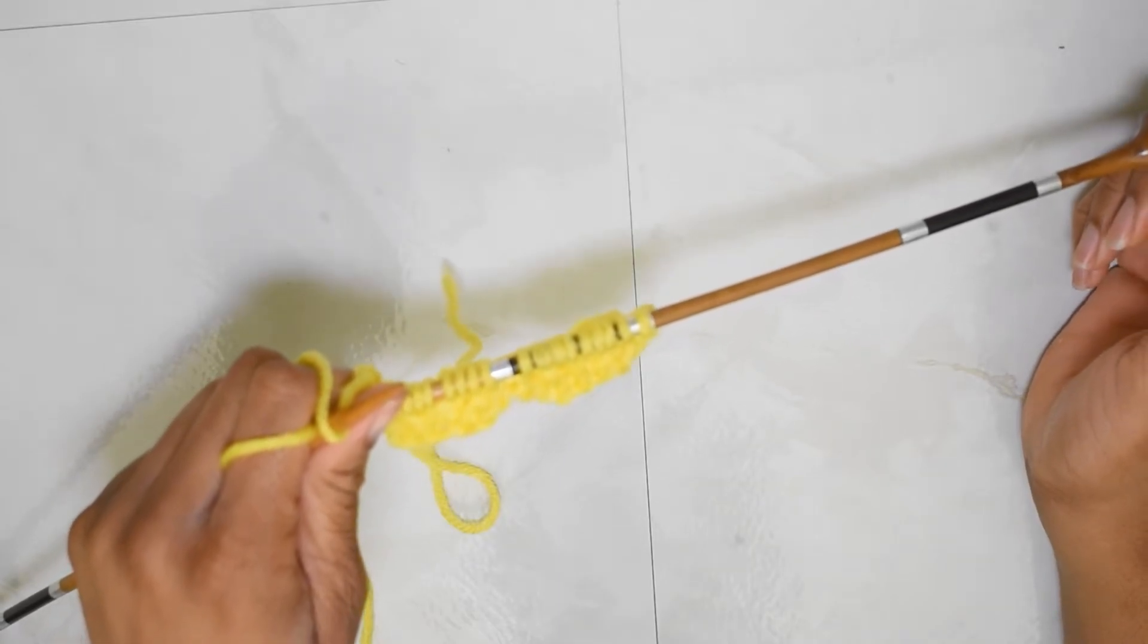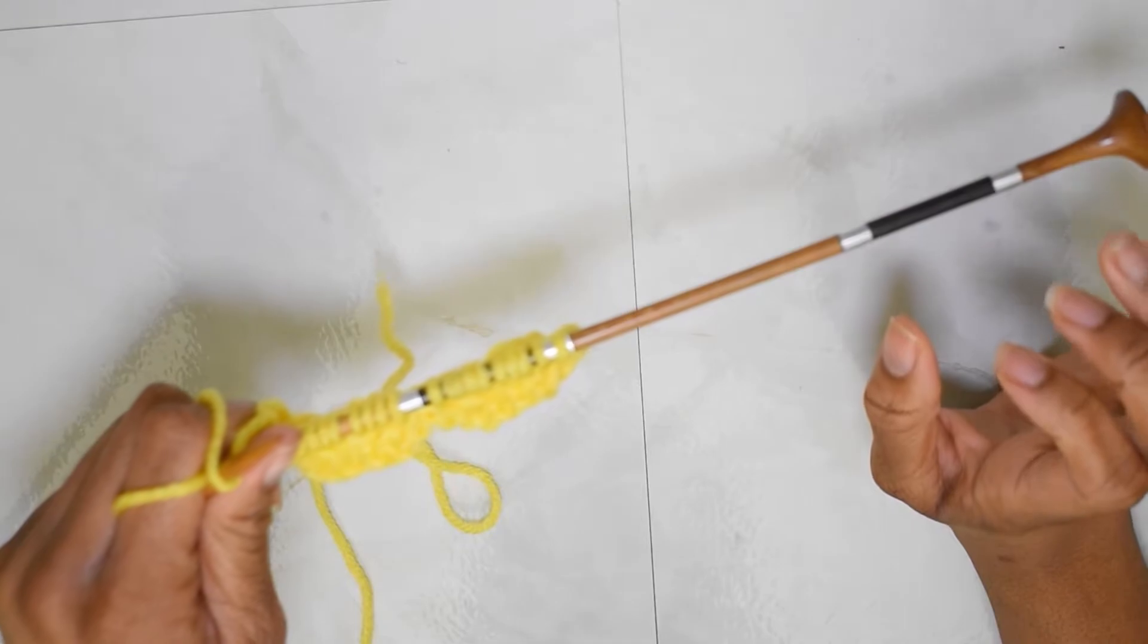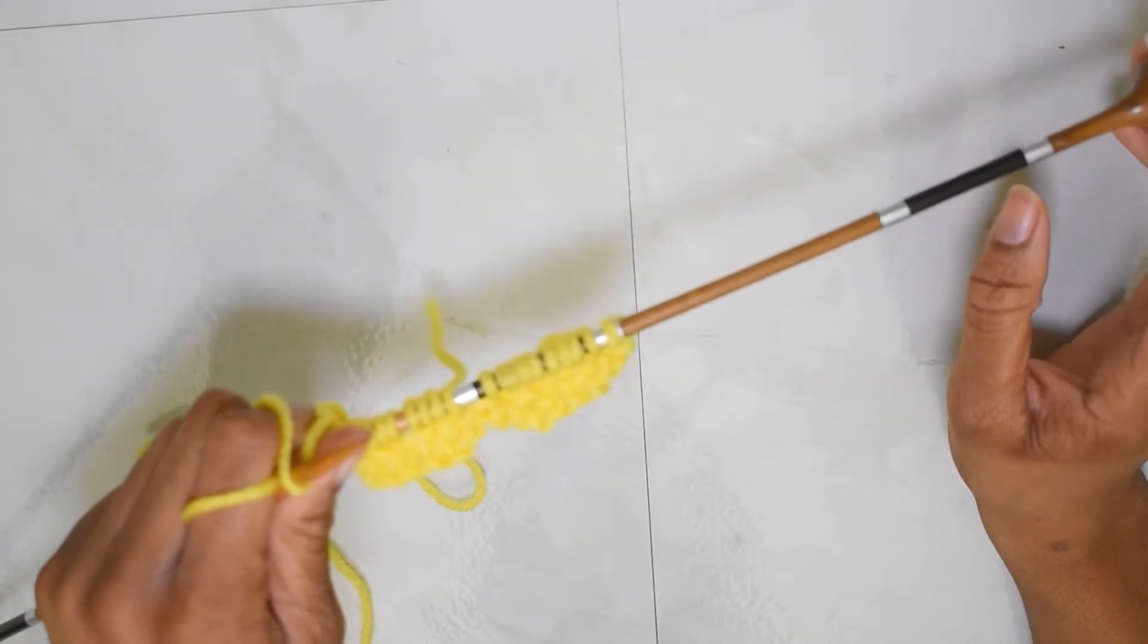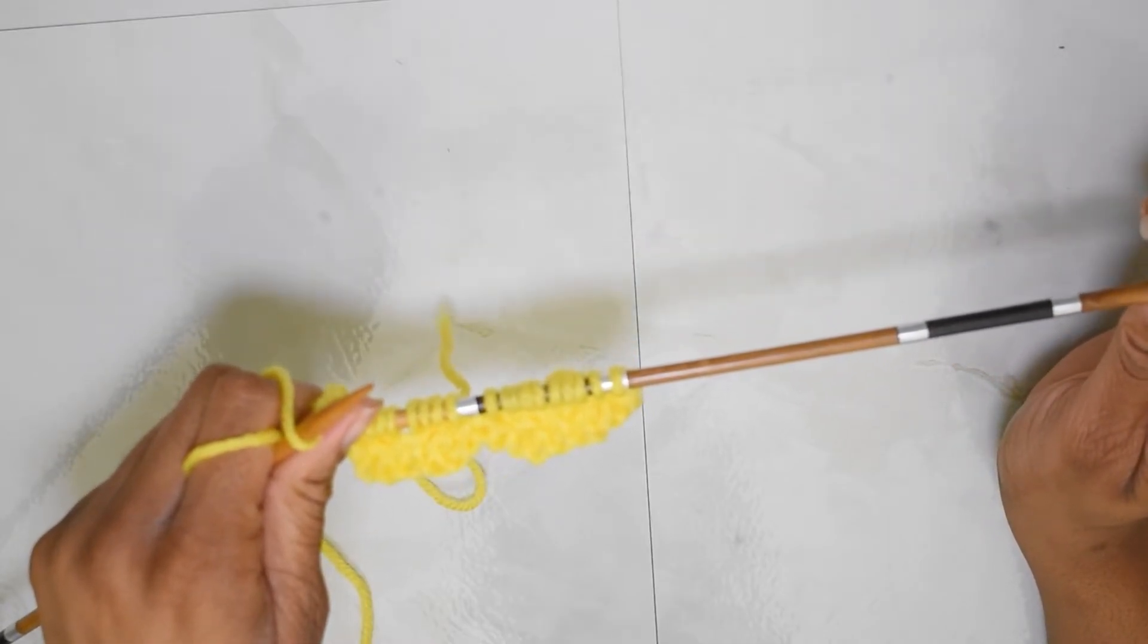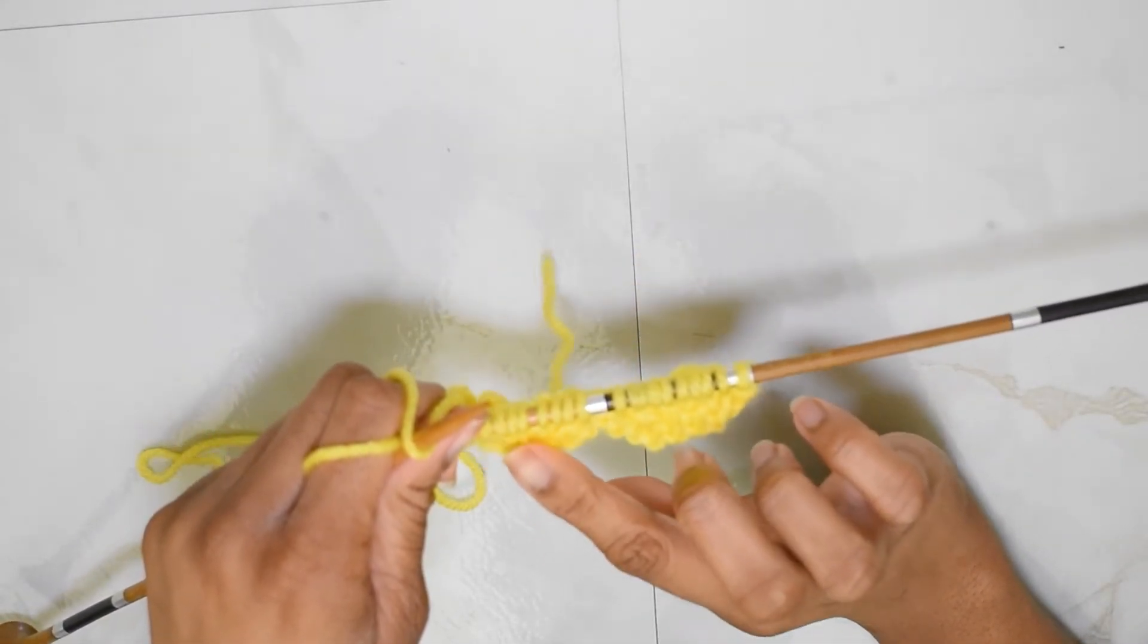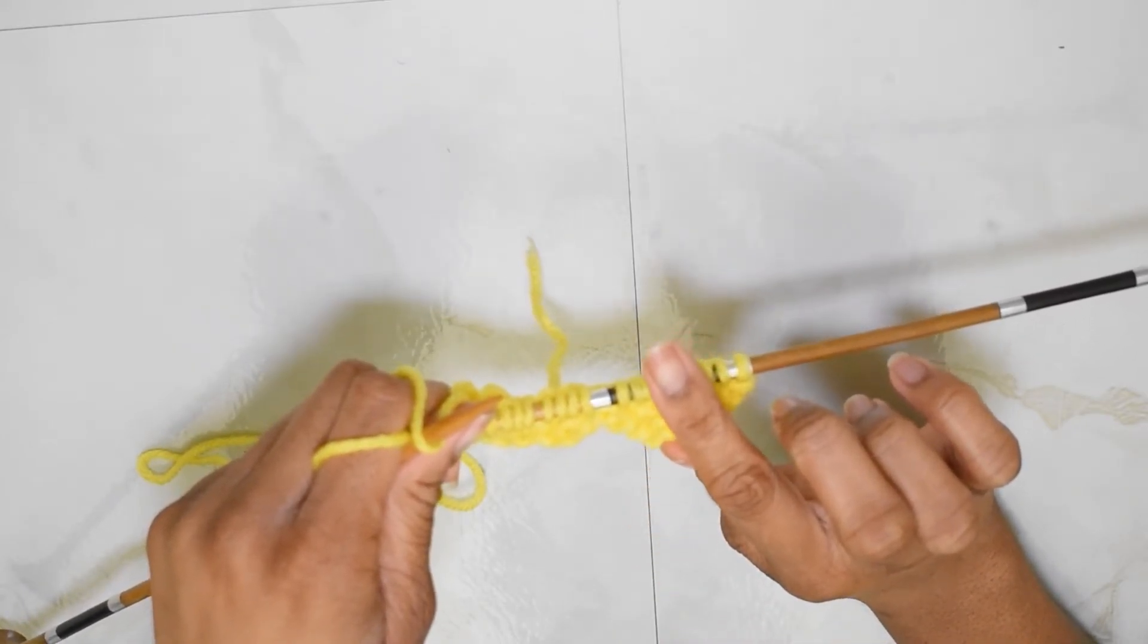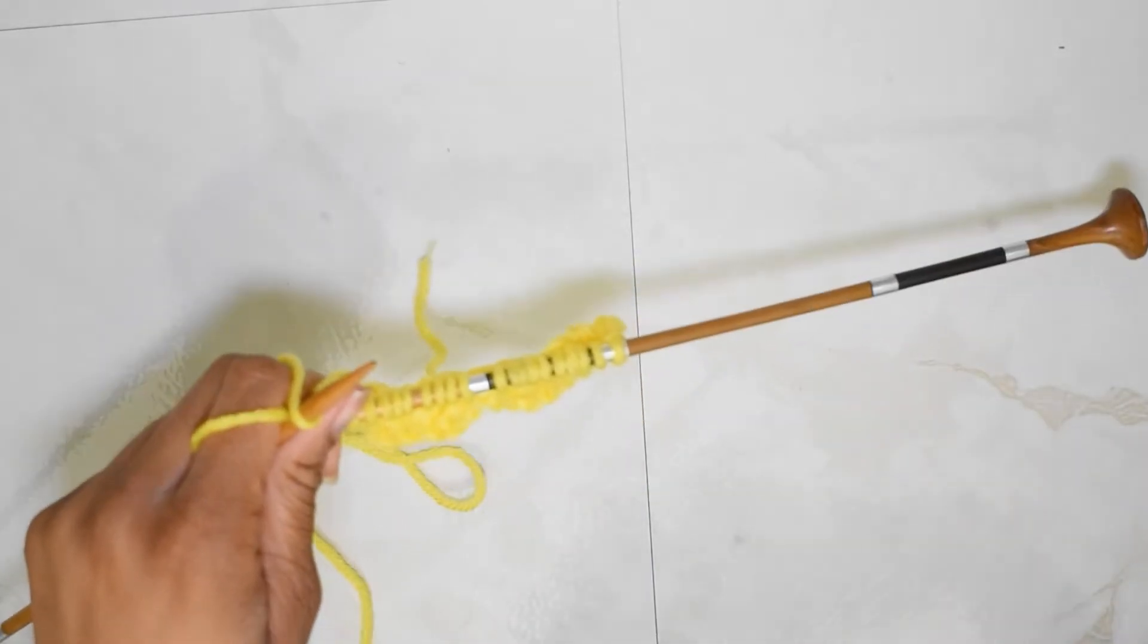Now what I want to do for row four is all purl. And then for row five, I'm going to do all knit and then I'll meet you guys back for row six. So row four, we're going to purl. Row five, we're going to knit. Row six, we're going to purl. And then I'll meet you back for row seven. That sounds good.